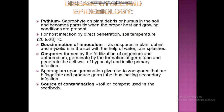Oospores are formed by fertilization of oogonium and antheridium. The oospore germ tube causes primary infection. For secondary infection, sporangia upon germination give rise to zoospores that produce germ tubes which incite secondary infection.